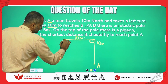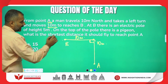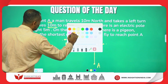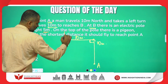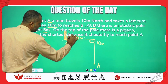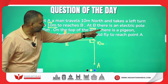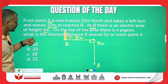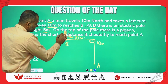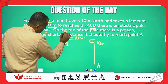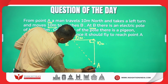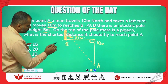At point B there is an electric pole of height 5 meters. Let's draw an electric pole of height 5 meters. On the top of the pole there is a pigeon. What is the shortest distance it should fly to reach point A? So the pigeon is at the top of the pole — what is the shortest distance from the top of the pole to point A?